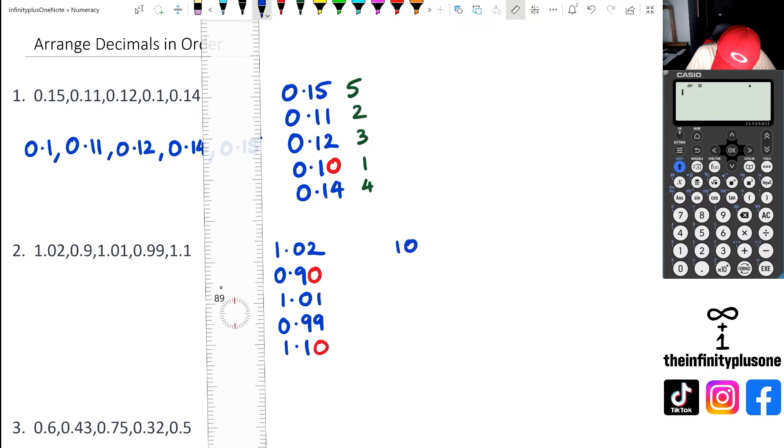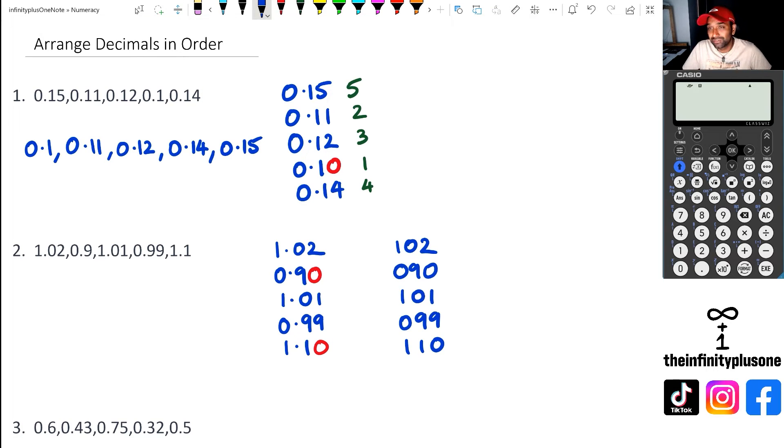If I ignore the decimal point, these are the numbers I see: 102, 090, 101, 099, 110. The beauty of math is we can do these weird rules and yet it works out. This is because of place value.